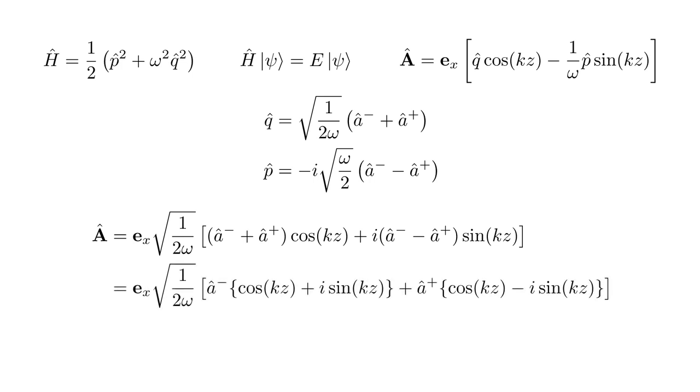Combining â and â† terms inside the square brackets, we get â times [cos(kz) + i sin(kz)] plus â† times the same quantity with i replaced by -i.